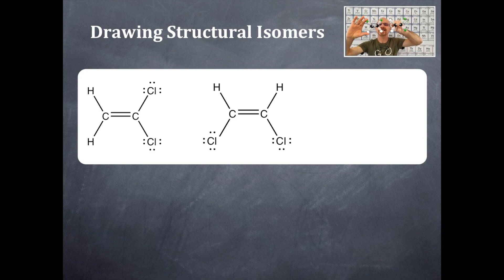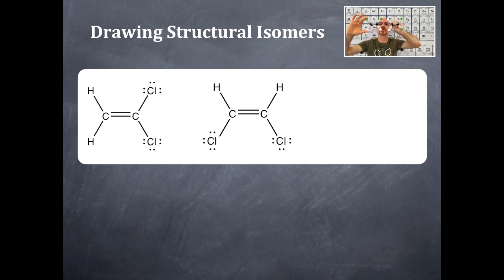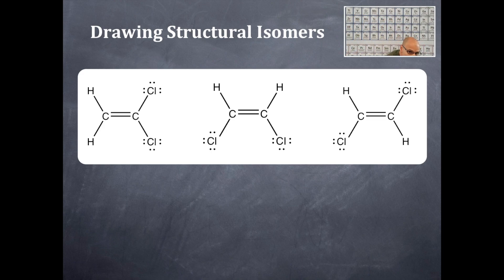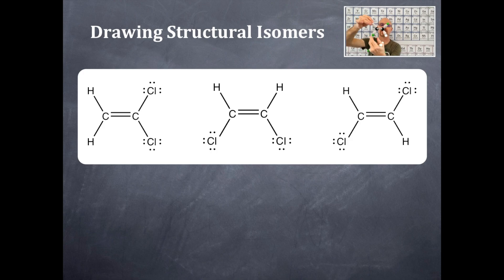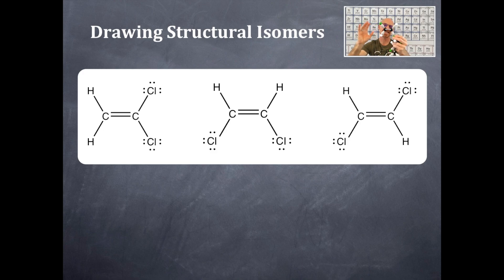The next structural isomer has one chlorine removed and one hydrogen removed and placed in different locations, so they are not the same as the previous structures. In this one, the chlorines are opposite each other. Whether you redraw it different ways, they're all the same thing. They still have that double bond which inhibits rotation — that is key.